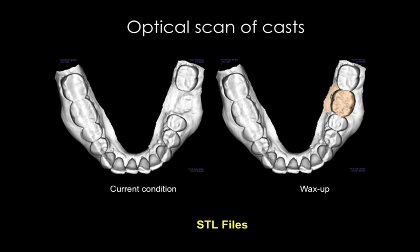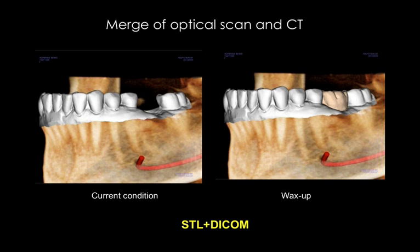We have an optical scan of the cast with and without the wax-up, and now we refer the patient for a CT scan. Since there are common mutual points, the scan of the wax-up and models can be merged with the CT scan, allowing us to plan the case with all the anatomical information as well as the restorative information. This important merging step — combining the STL files, the virtual 3D models, with the DICOM files from the CT scan — gives us essentially a virtual patient inside our virtual surgery software.